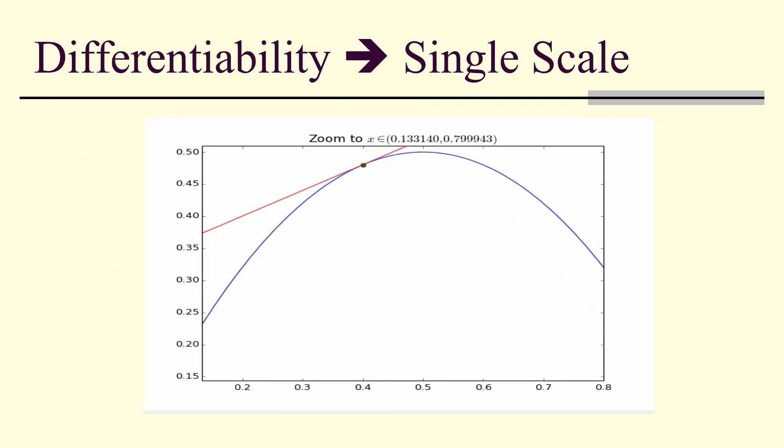Smaller scales vanish in the limit of distances approaching zero. Here we have differentiability. Notice that in the limit, as you approach the point of tangency, everything disappears except that one single scale modeled by the linear transformation.